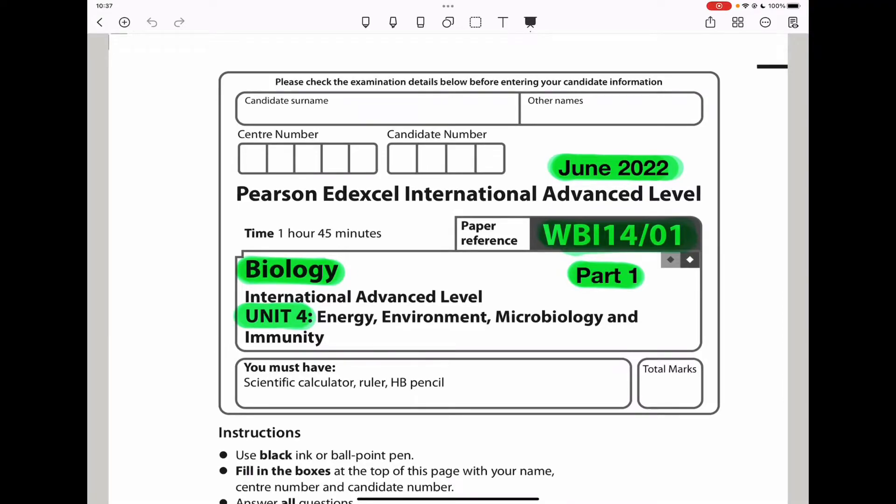Welcome to the Chemistry, Biology, and Math Revision Hub. Today we are doing the Pearson Edexcel International A-Level Biology Unit 4 for June 2022. I will do this paper in two parts. The first video will be question 1 to question 4, and the second video will be from question 5 to question 8. Let us begin with question 1.